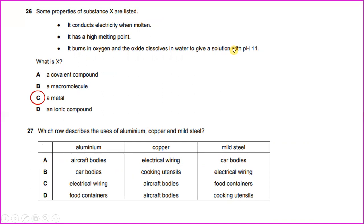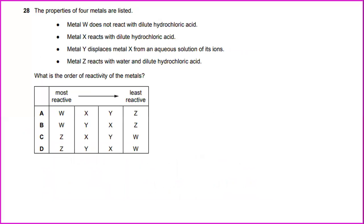Question describes the uses of aluminum, copper and mild steel. Aluminum is used for aircraft bodies and copper is used for electrical wiring. And the mild steel is used also for the bodies. The two components of steel. In other words, the properties of metal are listed.